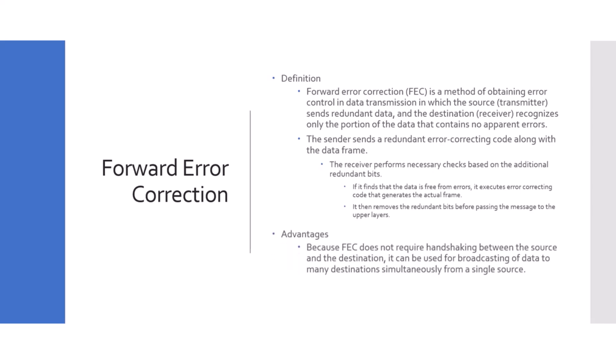Looking at the advantages of FEC: because FEC does not require handshaking between source and destination, it can be used for broadcasting data to many destinations simultaneously from a single source. In TCP you need a send-acknowledge cycle for each destination individually. With UDP and FEC, one source can send to many destinations at once — for example, sending to five or ten Teams users simultaneously. FEC also saves bandwidth required for retransmission, since packets are not being resent.